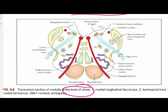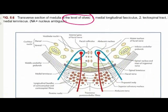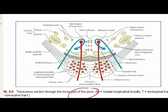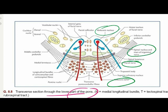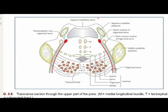Moving on to the transverse section of the pons, the lower part of the pons contains in its gray matter the nuclei of the sixth, seventh, and eighth cranial nerves, and the nucleus of the spinal tract of the trigeminal nerve. The white matter contains the medial and spinal lemnisci, along with the trapezoid body and associated nuclei.